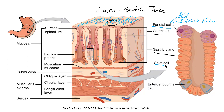Further down we have our chief cells, which contain little granules called zymogen granules. The zymogen granules become active protease enzymes once they reach the acidic environment of the lumen. We keep them inactive until they get out of the gland and up into the lumen where the acid in the gastric juice can turn the zymogen into enzymes such as pepsin.